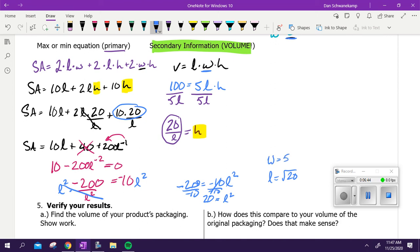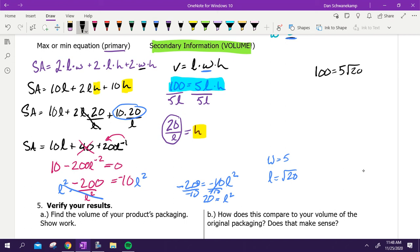The only other thing I have left to do is to solve for height, and the best way to solve for height is to plug back into this volume equation because I know what it should be equal to. So that means I'm left with this problem: 100 equals 5 times square root of 20 times height. So I would take 100 divided by 5—that would get me 20.